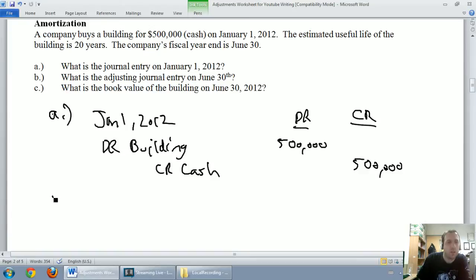On to the second part, the adjustment part of this. So on June 30th, we've got to say, is our building still worth $500,000? You might say, well, yeah, buildings don't lose value that quickly. Well, in accounting, we systematically have to reduce the value of our assets. So if we said it's going to be useful for 20 years, and six months has gone by, January to June, we've got to say it's reduced in value six months' worth.